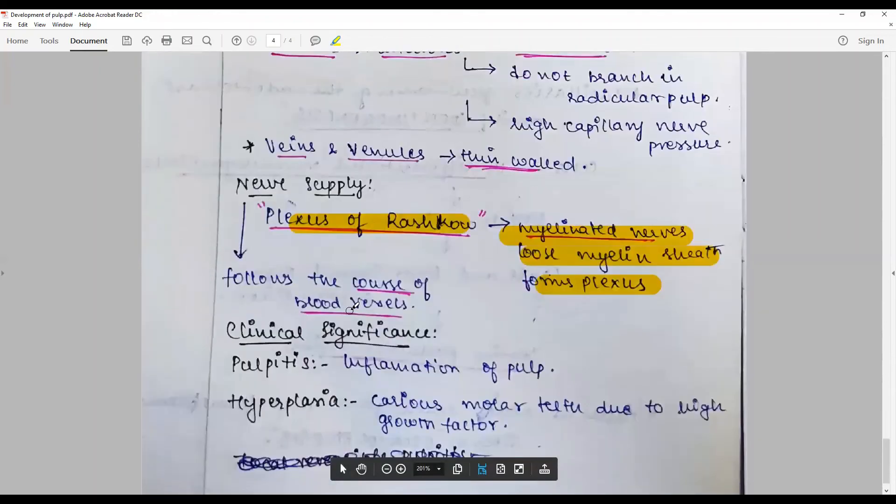Clinical significance: when inflamed, pulp causes pulpitis, inflammation of the pulp. Hyperplasia - under certain conditions they can proliferate due to high growth factors to produce pulp polyp.